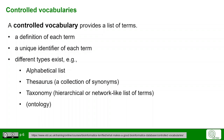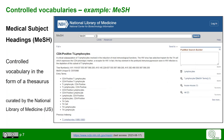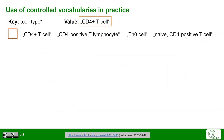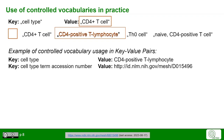Sometimes controlled vocabularies are even termed ontologies, but there is a difference. Controlled vocabularies can be used to standardize terms. For example, the Medical Subject Headings controlled vocabulary is in the form of a thesaurus curated by the National Library of Medicine. It provides a definition of CD4-positive T-lymphocytes, a standardized spelling, and synonyms. If we use the MeSH controlled vocabulary, we write 'CD4-positive T-lymphocyte' as our value, and add a second key-value pair with the URL linking to the term's ID in MeSH.